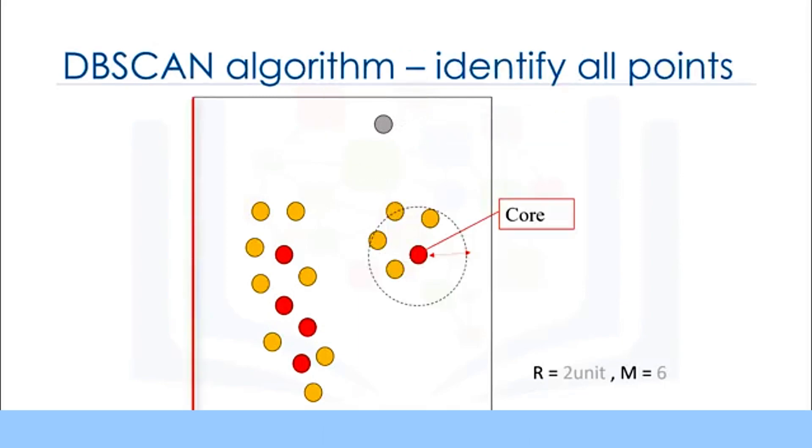We continue and visit all the points in the dataset and label them as either core, border, or outlier.